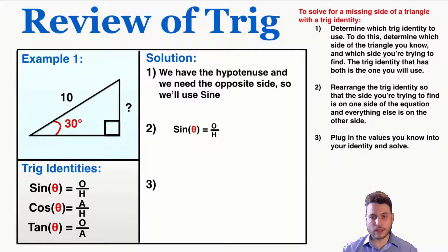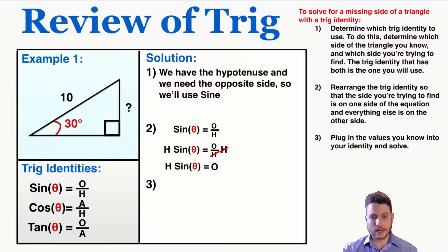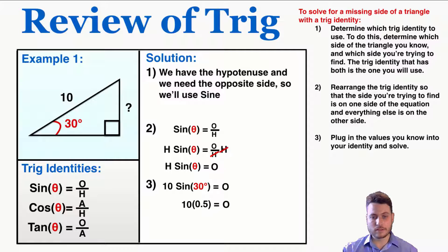Step two: rearrange the trig identity so that the side you're trying to find is by itself on one side of the equation. I'm trying to find the opposite side, so I multiply both sides by the hypotenuse, giving me: opposite = hypotenuse × sine(angle). Step three: plug in the values. So 10 × sine(30°) gives the opposite side. Plugging this into my calculator: 10 × 0.5 = 5.